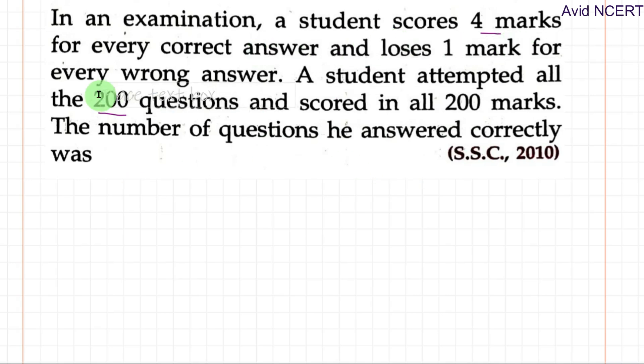So a student scores four marks for every correct answer and loses one mark for every wrong answer, and the mark he got out of is 200 marks. So to form this equation, it is four marks for every correct answer and loses one mark, since it is loses, minus one mark for every wrong answer.